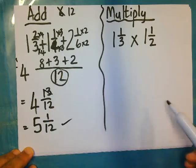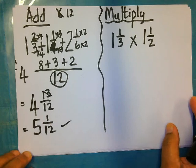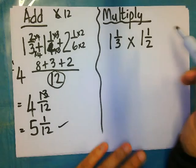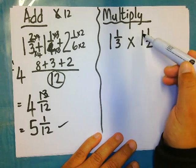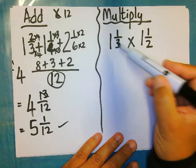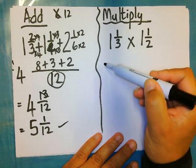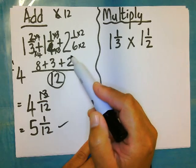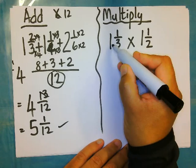When we multiply mixed numbers, take note we don't multiply the whole numbers individually. We don't say one times one is equal to one like we did with the addition when we added them. We get rid of the whole number by converting the fraction into an improper fraction.